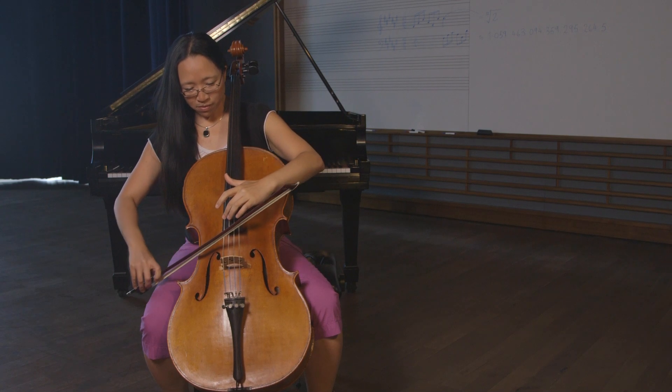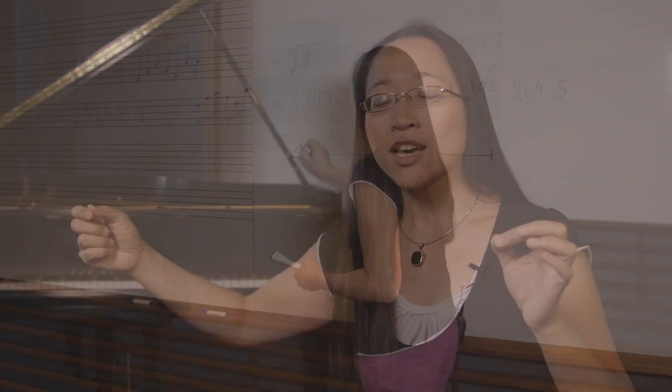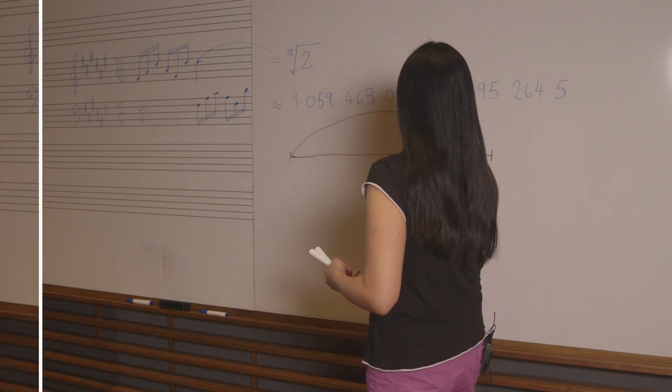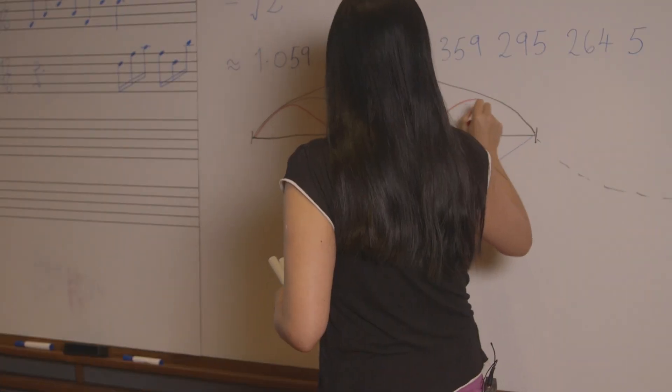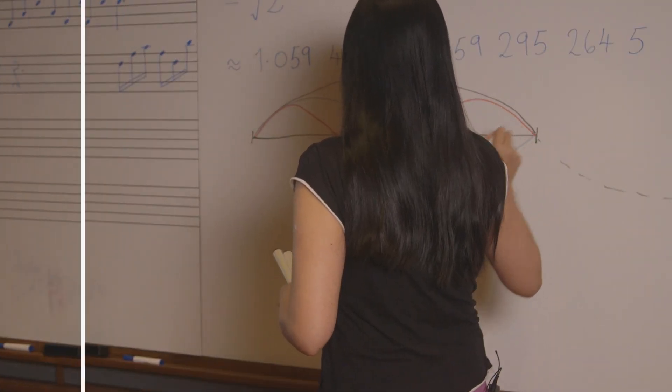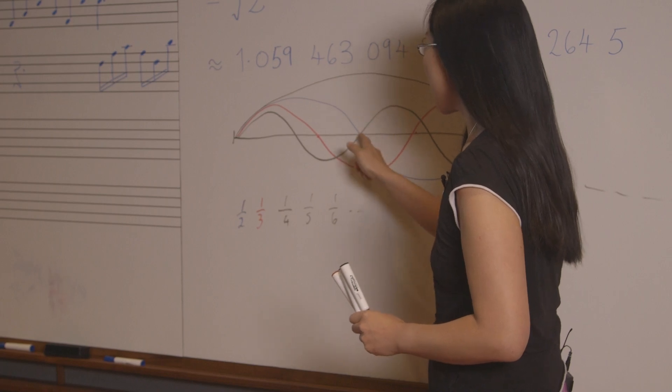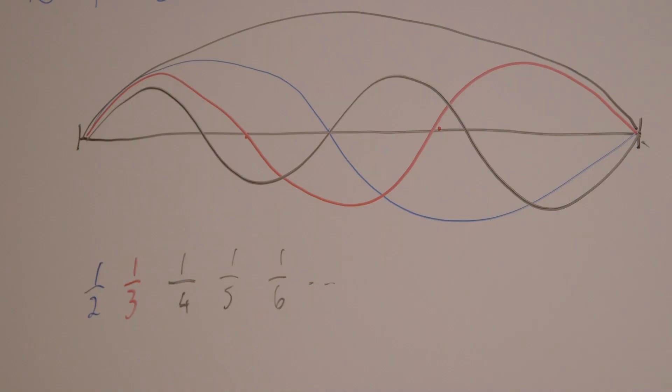When you play a note on a string, the two ends of the string are fixed, and that makes a wave with fixed ends — a sine wave oscillating with those fixed ends. The harmonics of that note are all the other waves that also go through that point: there's one that's this big, then one that's half that size, then a third of that size, then a quarter, then a fifth.